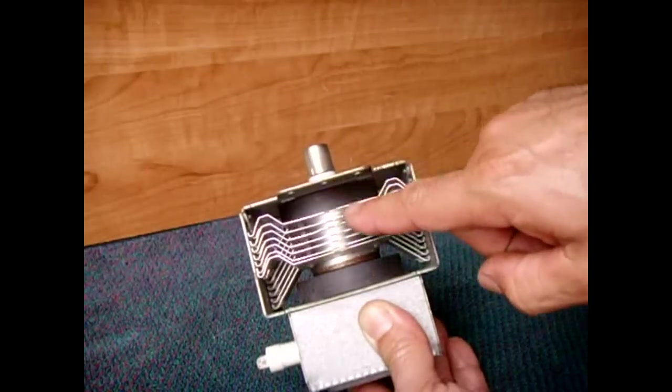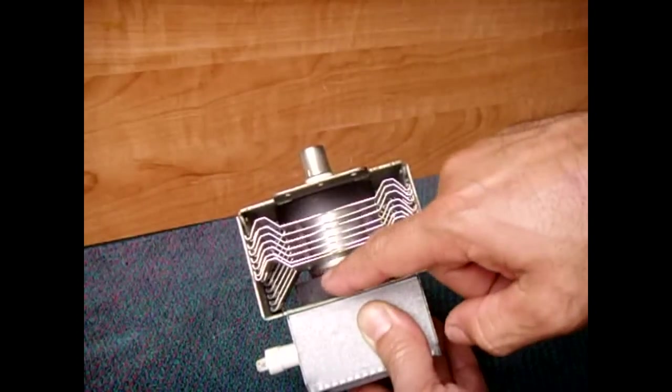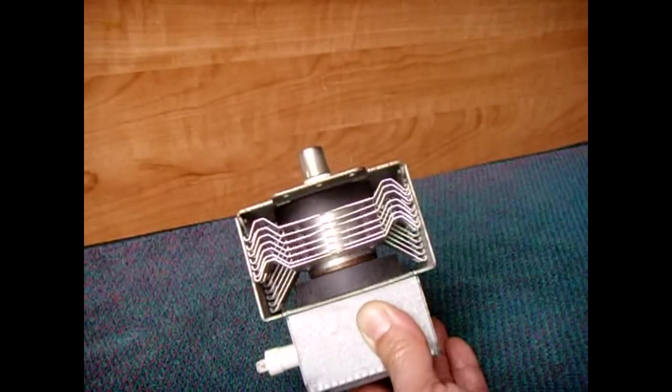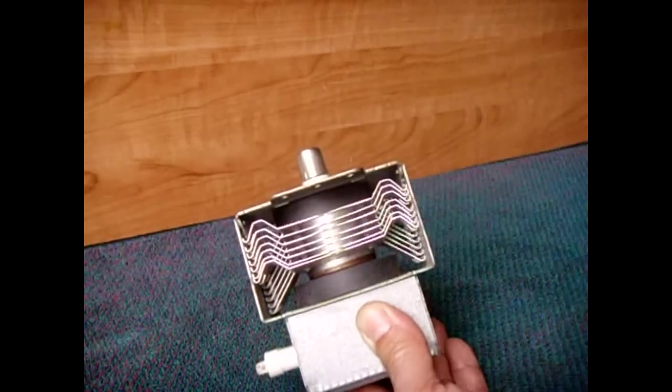Once that magnet's removed, you can pull off all of these aluminum cooling fins, throw them to the side, then you can remove the bottom magnet as well. Be very careful. They're ceramic, and if you try prying on these, you will crack them in half.